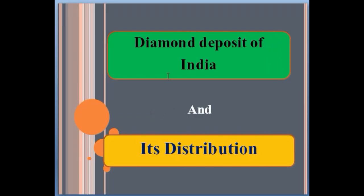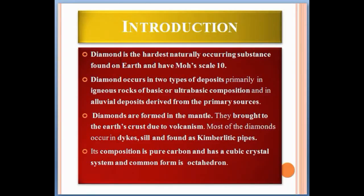Today we talk about diamond deposits of India and their distribution, and also the world-known deposits of diamond. Diamond is the hardest naturally occurring substance found on Earth and has a Mohs hardness of 10. Diamond occurs in two types of deposits: primarily in igneous rocks of basic or ultra-basic composition, and in alluvial deposits derived from those primary sources.